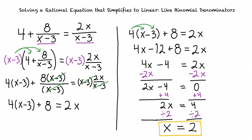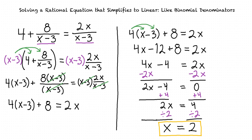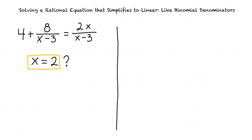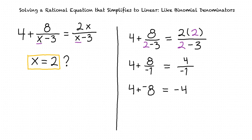How do we know if we found the right answer? We can check our answer by substituting 2 for x in our original equation and checking if the equation holds true. We rewrite this as 4 plus 8 over 2 minus 3 equals 2 times 2 over 2 minus 3, then simplify. We can simplify 2 minus 3 to negative 1 and 2 times 2 to 4, giving us 4 plus 8 divided by negative 1 equals 4 divided by negative 1. Since 8 divided by negative 1 equals negative 8 and 4 divided by negative 1 equals negative 4, this simplifies to 4 minus 8 equals negative 4.